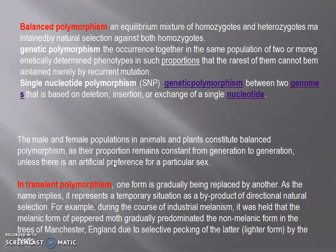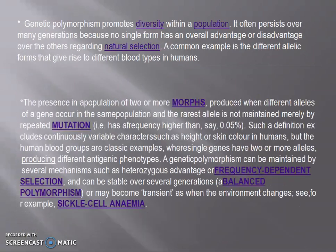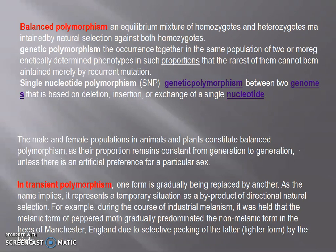Salient features of balanced genetic polymorphism: none of the morphs tend to be eliminated; both alleles are maintained in equilibrium; each morph has selective advantage of equal intensity; none of the morphs have selective advantage over the other — everything is in balanced form; and heterozygotes have selective advantage over homozygotes. Examples include sickle cell anemia, Tay-Sachs disease, human ABO blood group, glucose-6-pyruvate dehydrogenase deficiency, and cystic fibrosis.